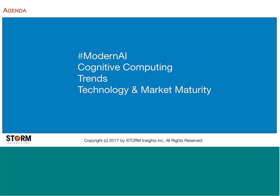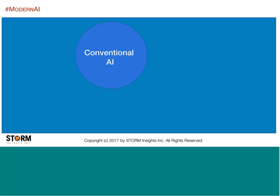I'll give you the overview of the talk today. What is modern AI? What makes it different? What's happening in it? What is cognitive computing? Why should you care, and why is it where it is? We'll look at a few trends, and then look at the maturity in the market for the technologies. I'm going to start off with what I call conventional AI — sometimes I think of this as traditional or classical AI.